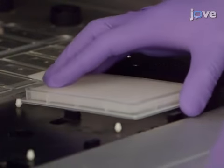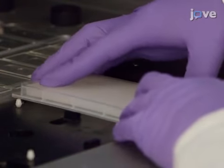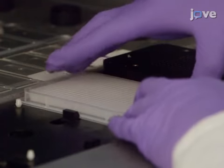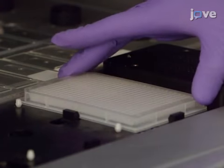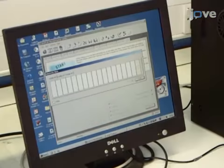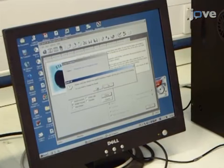Place the well plate on the plate holder with well A1 at the top right of the holder and ensure the well plate is firmly fixed. Confirm that the slide and well plate are in position when prompted.